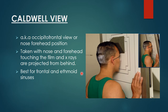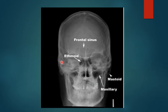The next view is Caldwell view, also known as occipital frontal view or nose-forehead position, because it is taken with the nose and forehead of the patient touching the film and x-rays are projected from behind. It is best for frontal and ethmoid sinuses. Here is an example of Caldwell view showing bilateral frontal sinuses, ethmoid sinuses, and maxillary sinuses also visible.